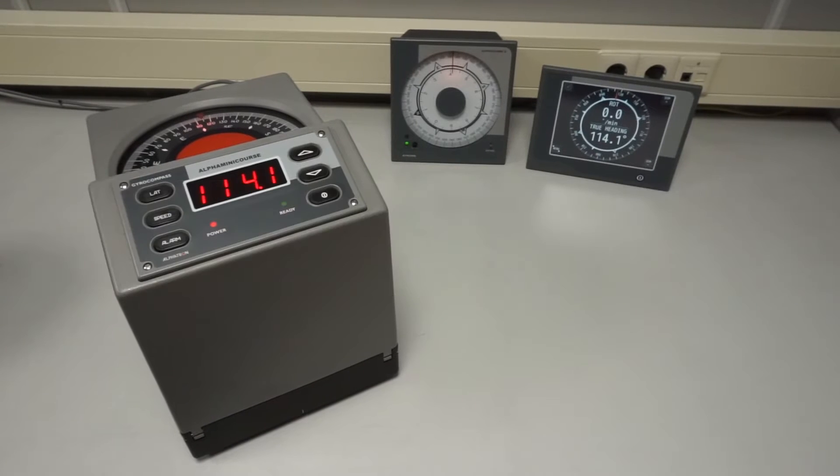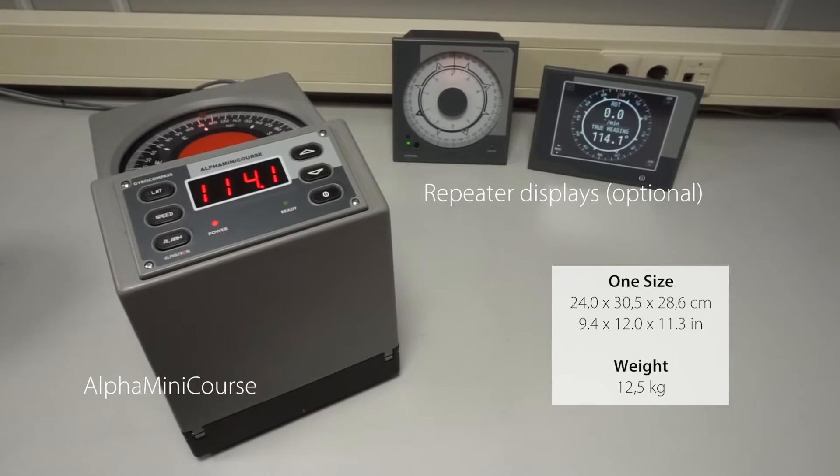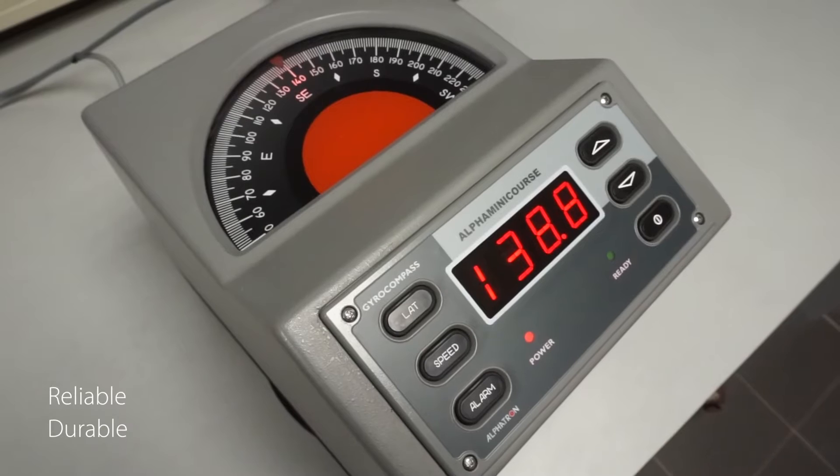The Alpha MiniCourse is one of the smallest gyro compasses in the world. It's been on the market since 2005, which proves it's a highly reliable and durable product.